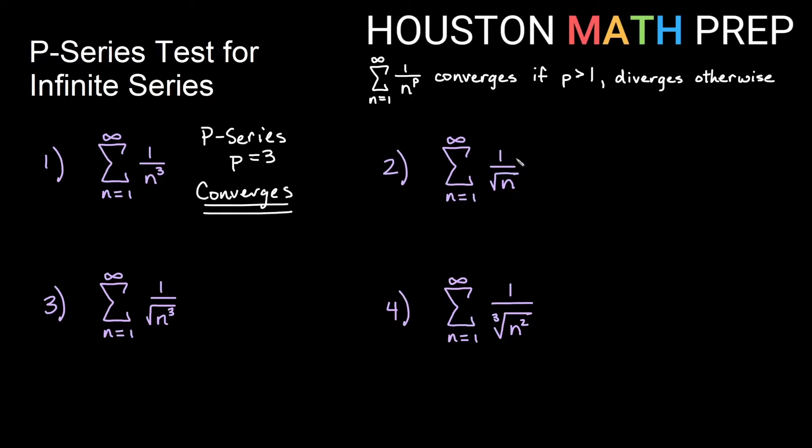We look at this next one. This is 1 over n with a square root, which is really n to the 1 half. This is a p-series where p is 1 half. 1 half is not greater than 1, so this series will diverge.